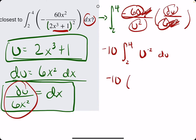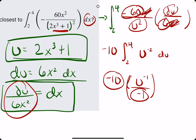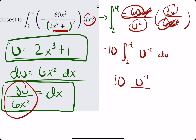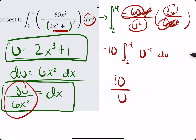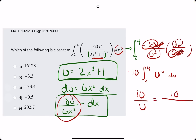We keep the negative 10. For the antiderivative, we add 1 to the exponent: negative 2 plus 1 is negative 1. We divide by that new exponent, negative 1. So negative 10 divided by negative 1 is positive 10. We have positive 10 times u to the negative 1, which can be written as 10 over u — and that equals 10 over 2x cubed plus 1, since that was our u.